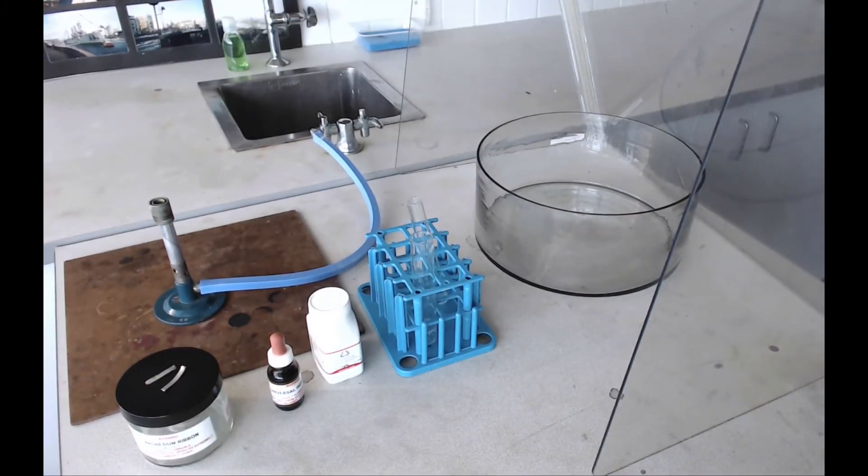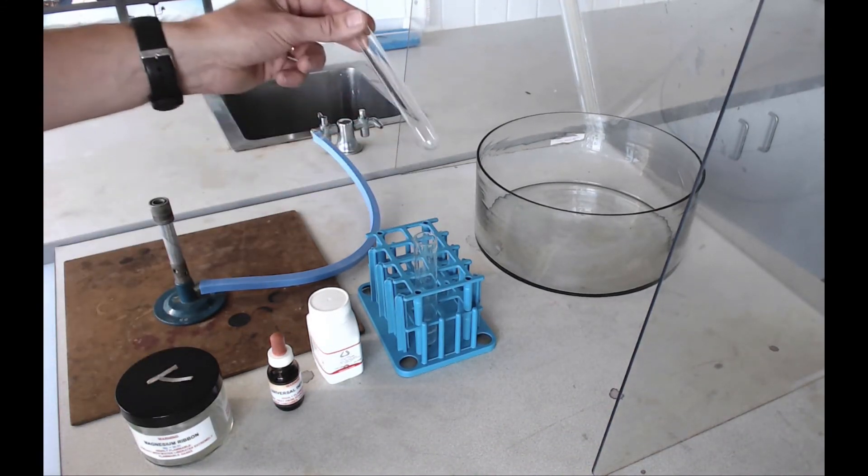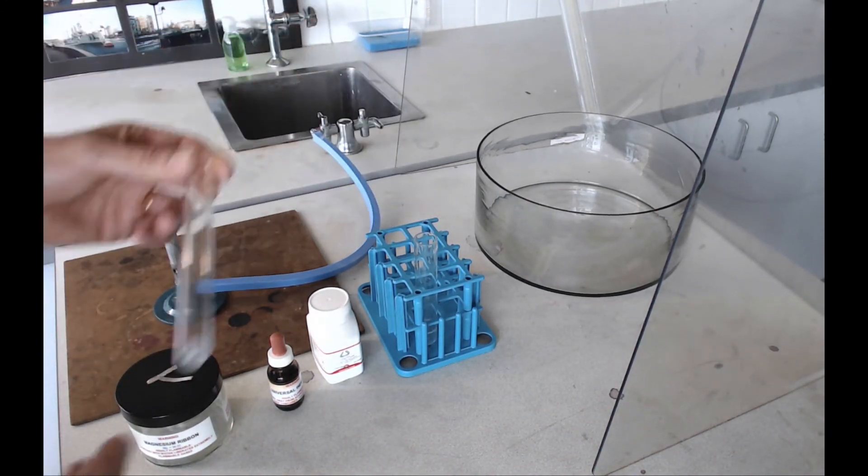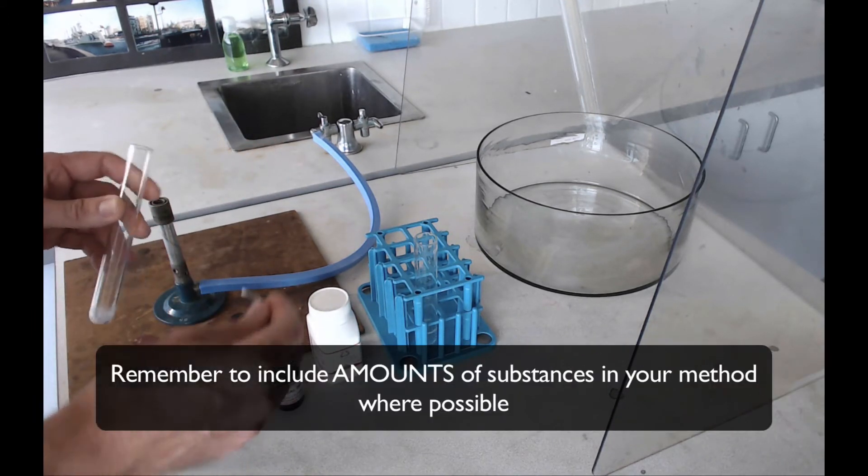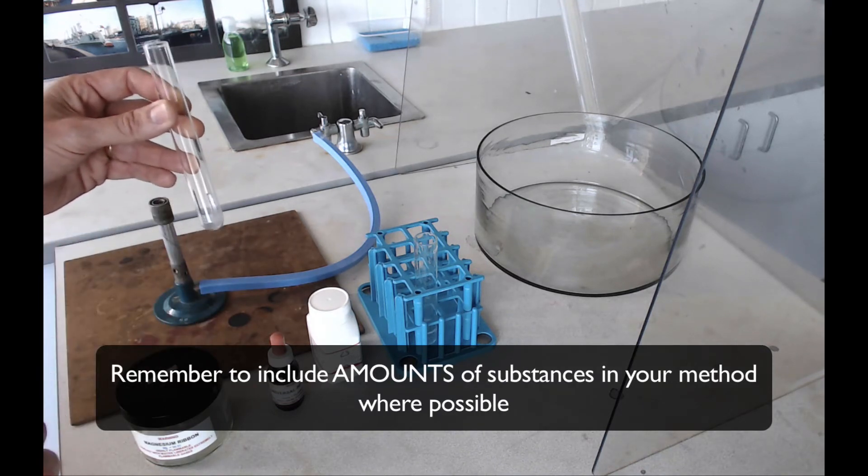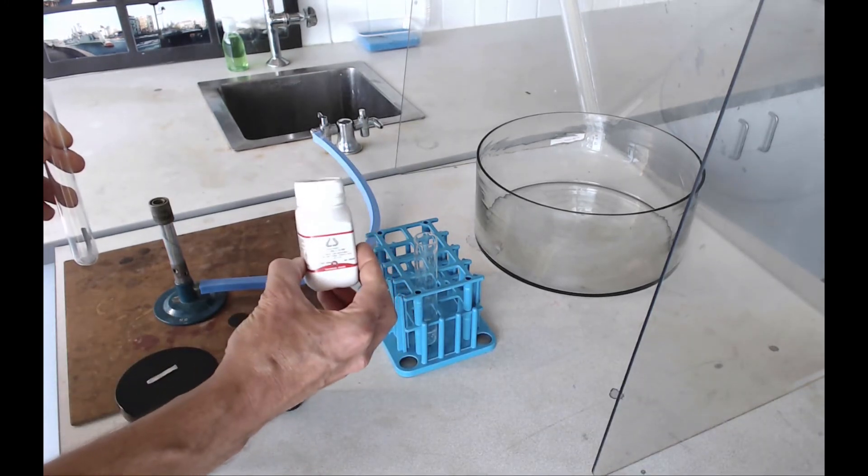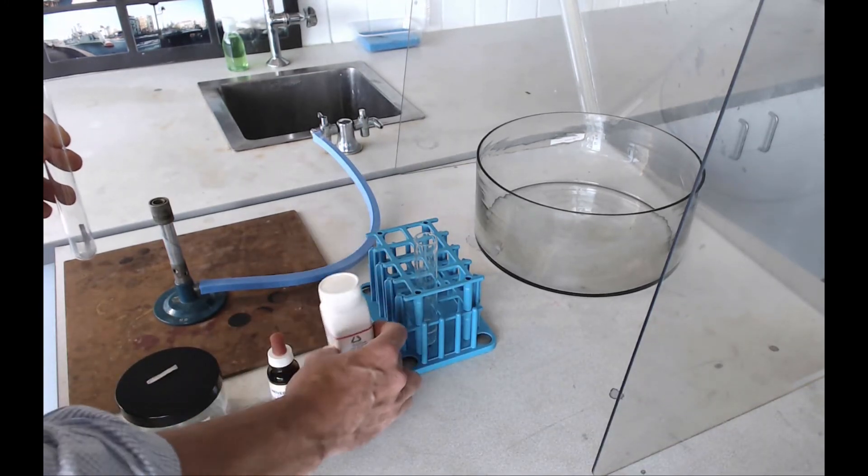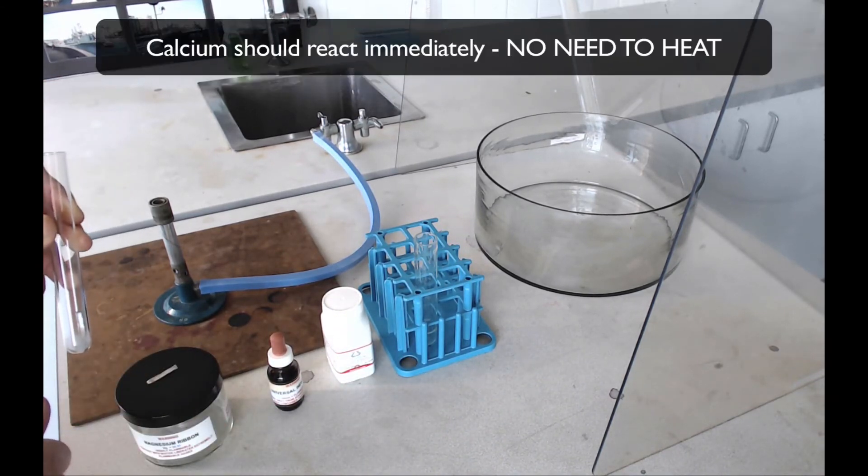There are certain similarities between that and the practicals that you're going to do, except you're going to do yours on a smaller scale in a test tube of water. The test tube needs to be about half full of water. You're going to drop your metal, whether it's about a two or three centimeter strip of magnesium or about a small spatula full of calcium granules, in separate test tubes of water, and you're going to observe how those metals react.